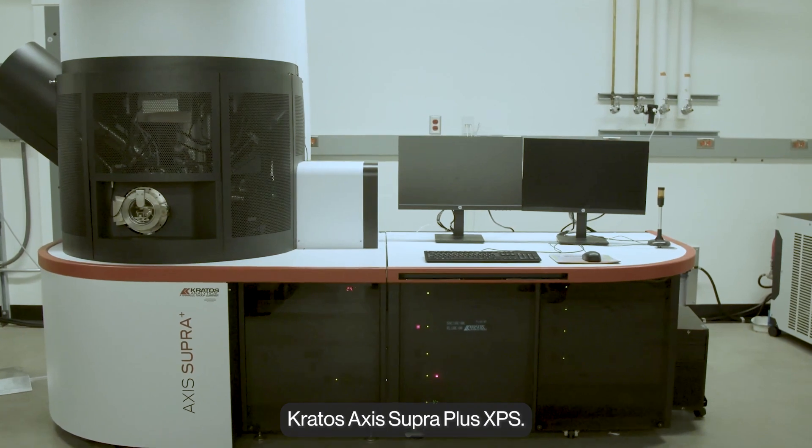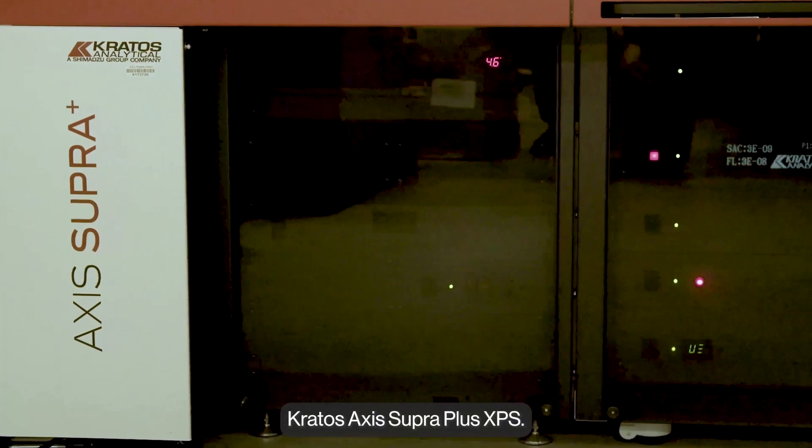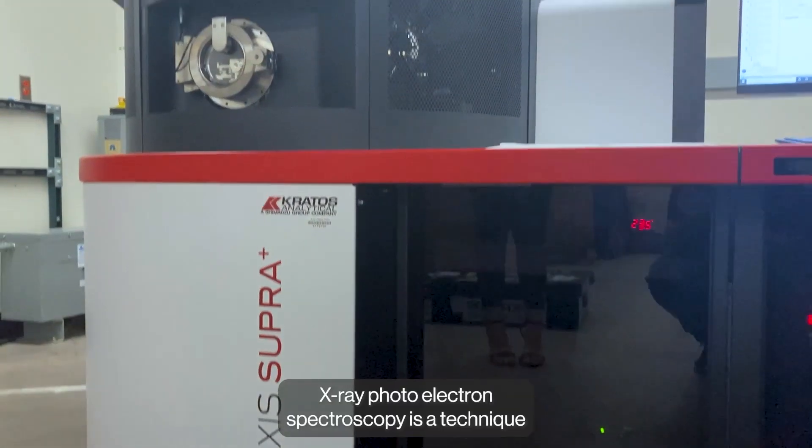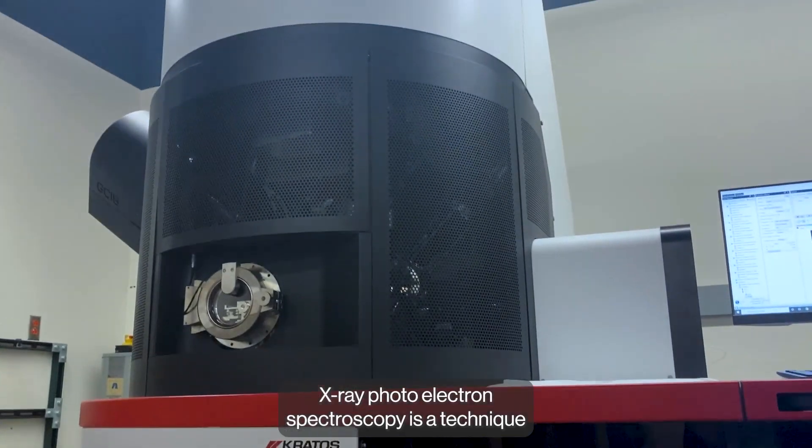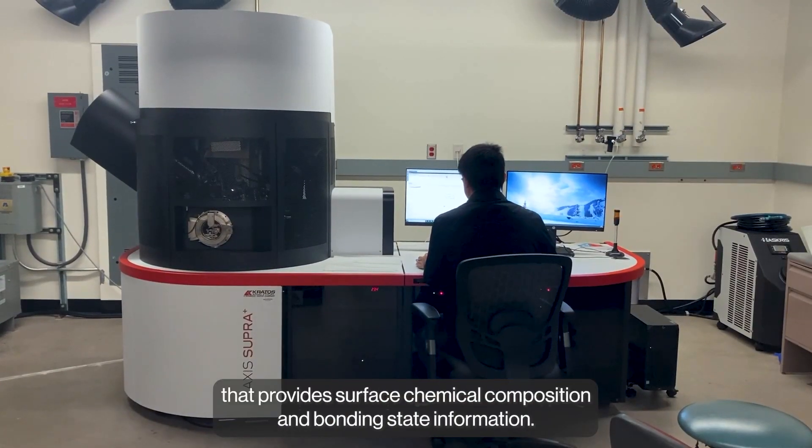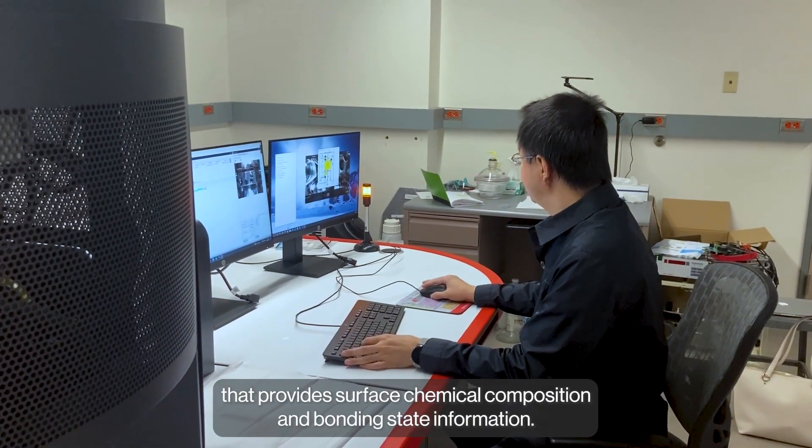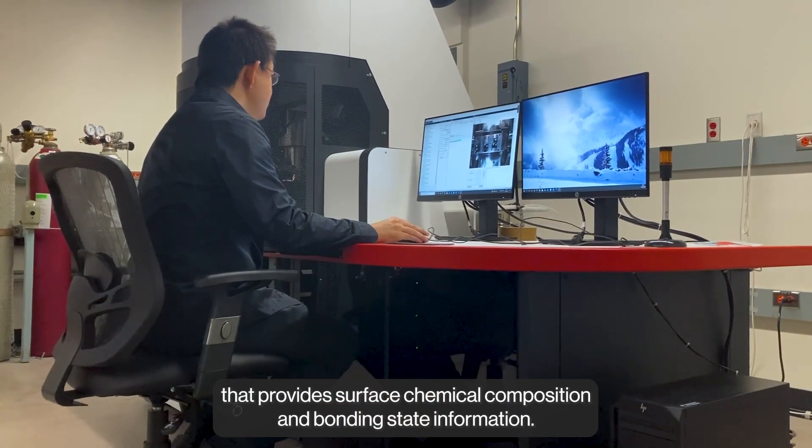This is our Kratos Axis Supra Plus XPS. X-ray photoelectron spectroscopy is a technique that provides surface chemical composition and bonding state information.